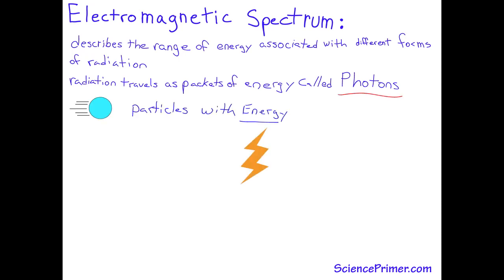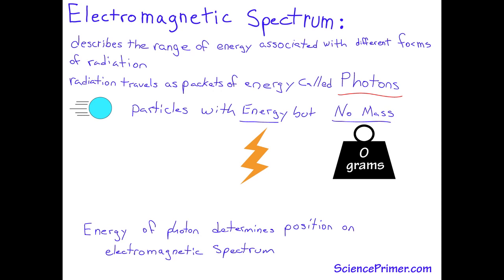Photons can transport energy the way particles do, but photons have no mass. Photons vary in the amount of energy they carry. The energy associated with a photon determines where on the electromagnetic spectrum it falls.